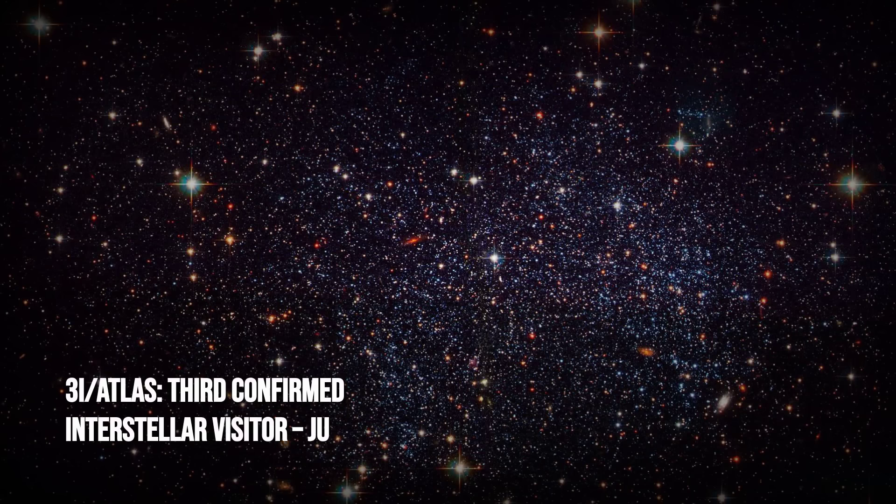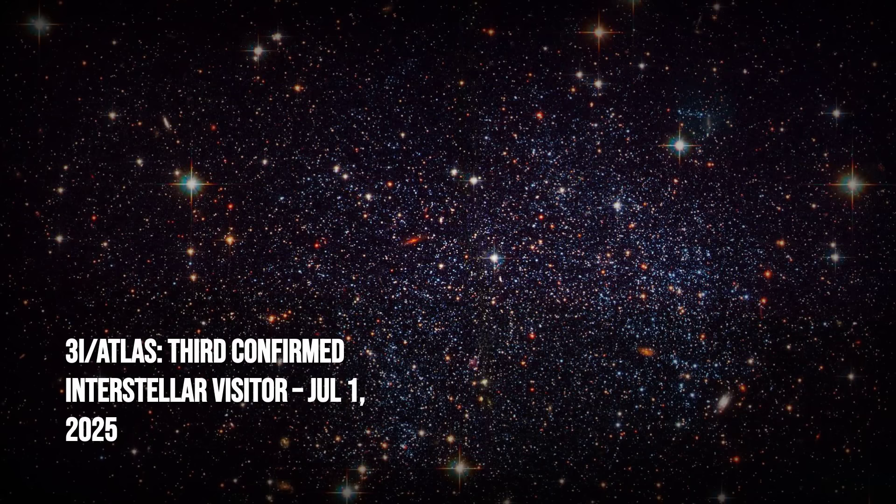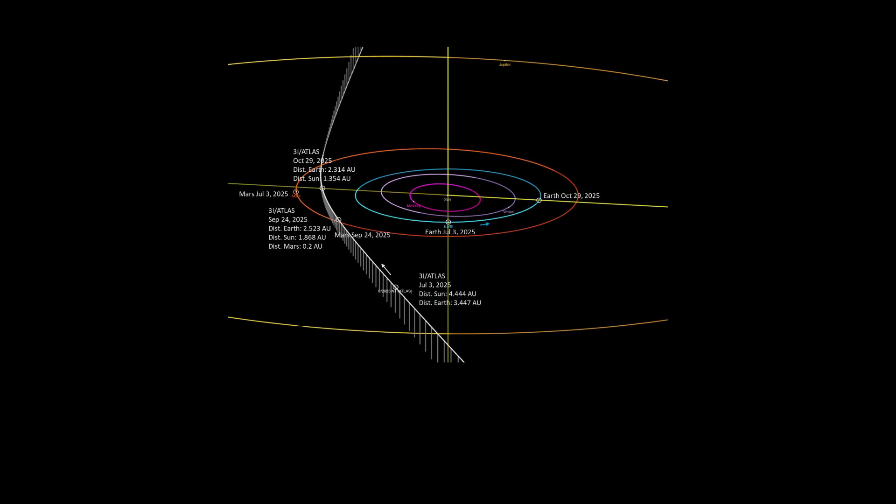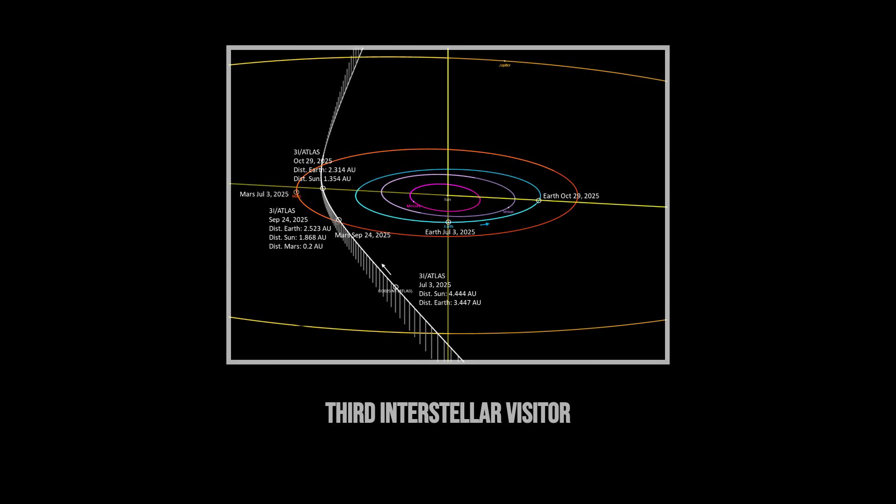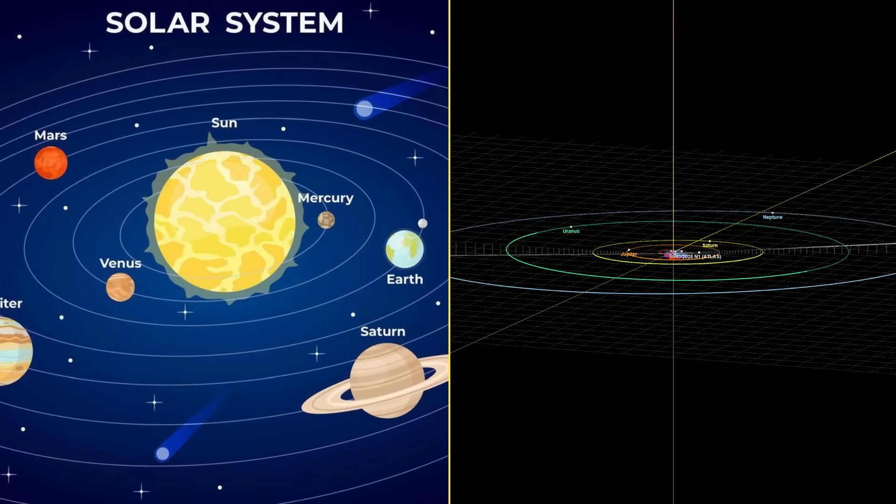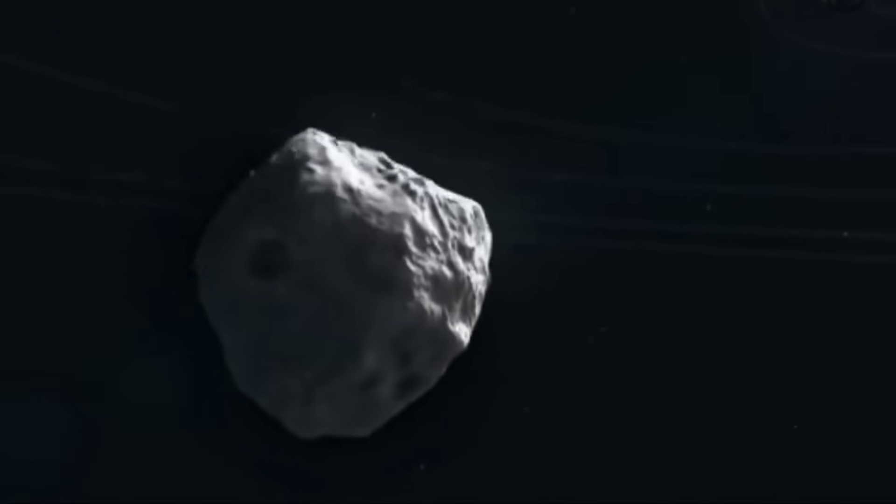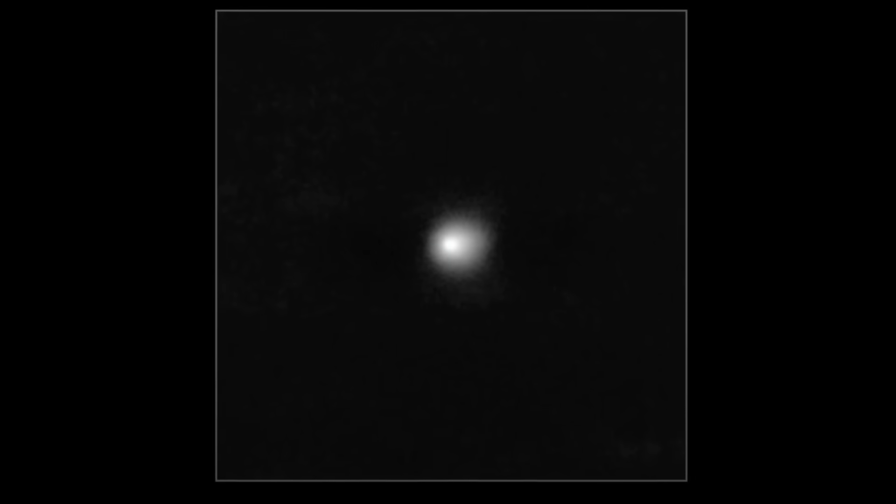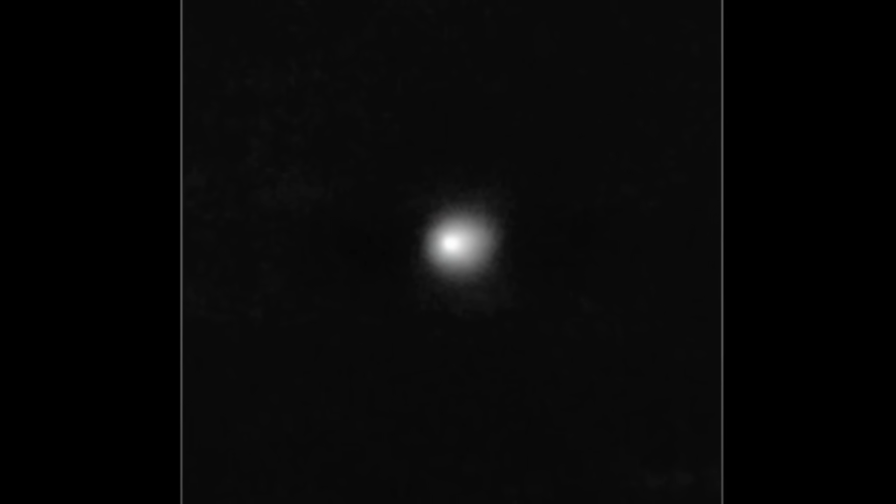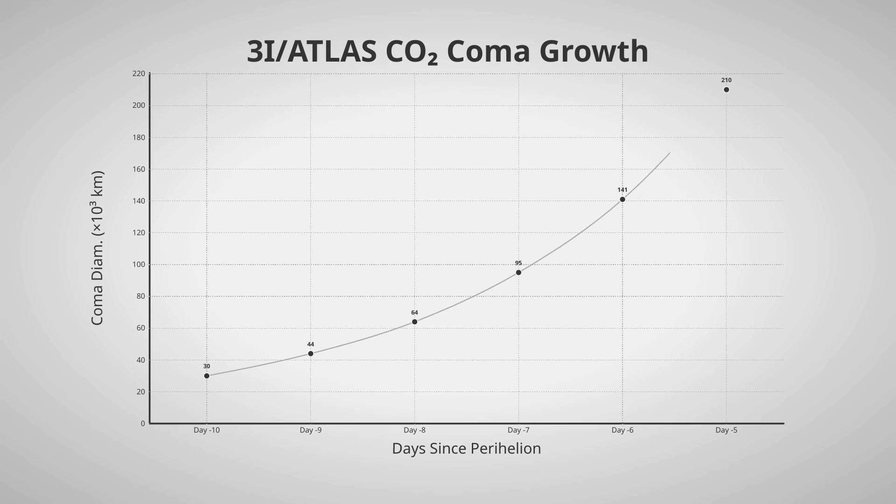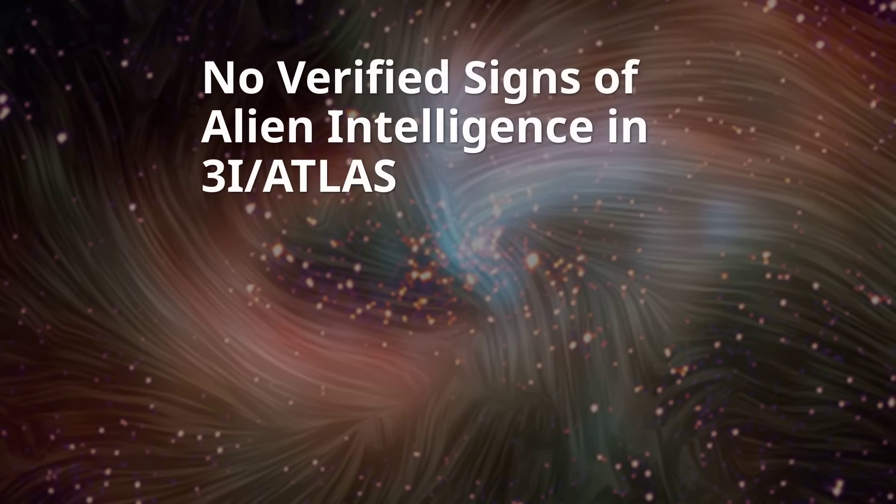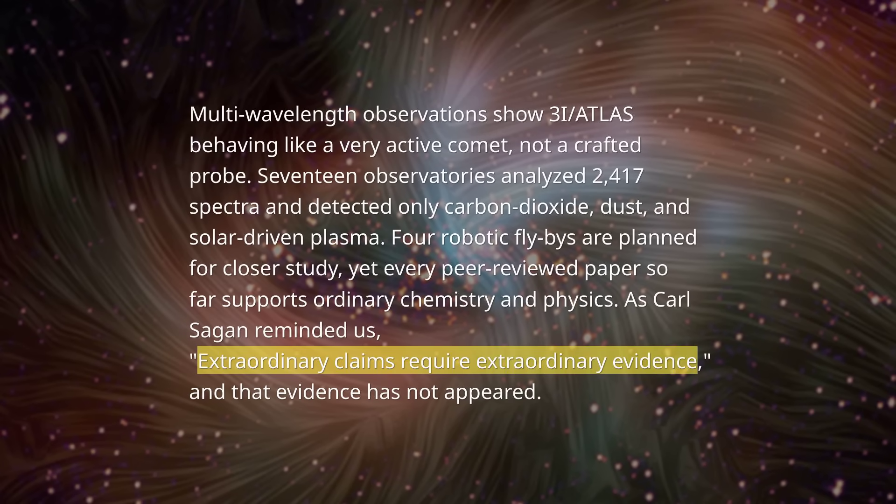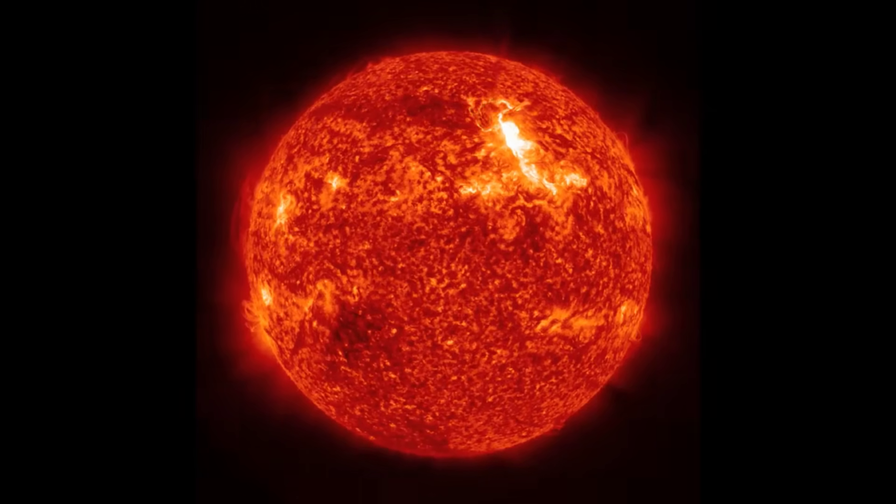On July 1, 2025, 3I-Atlas became the third confirmed interstellar object ever detected, with a hyperbolic orbit only five degrees off the ecliptic. Unlike its predecessors, it travels almost in the same plane as the planets, allowing for a rare, extended interaction with our solar environment. Hubble and Gemini images show a nucleus less than a kilometer wide and a carbon dioxide-rich coma spanning hundreds of thousands of kilometers. Despite speculation about intelligence, no peer-reviewed evidence supports that claim. Plasma can create complex patterns without consciousness.